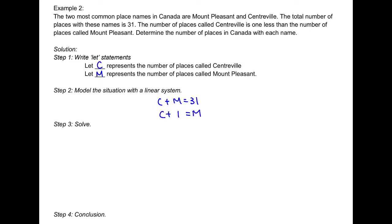In this linear system, we can use substitution because many variables have a coefficient of 1, or we can use elimination by rearranging equation 2. Since we already used elimination in Example 1, we're going to use substitution here. Labeling equation 1 and equation 2, from equation 2 we isolate C: C plus 1 equals M, so C equals M minus 1.